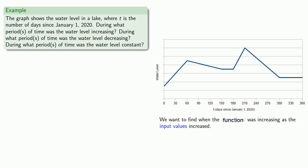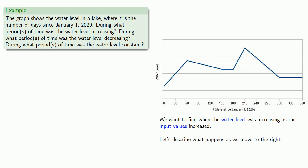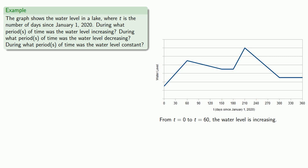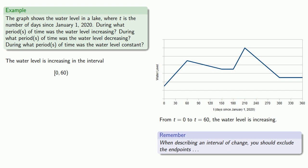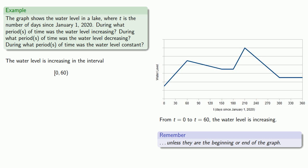In our graph, our function represents the y values, so we can replace function with y values. Our input values are the t values, and we want to describe what happens as we move to the right. From t equals 0 to t equals 60, the y values — the water level — is increasing. The water level is increasing in the interval from 0 to 60. Since 0 is the beginning of the graph, we include 0 using square brackets. However, since 60 is not the end of the graph, we exclude 60 and use a parenthesis.